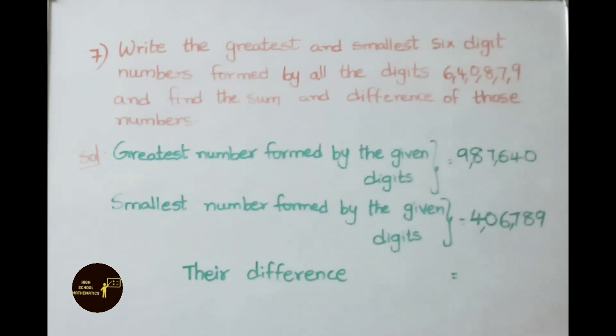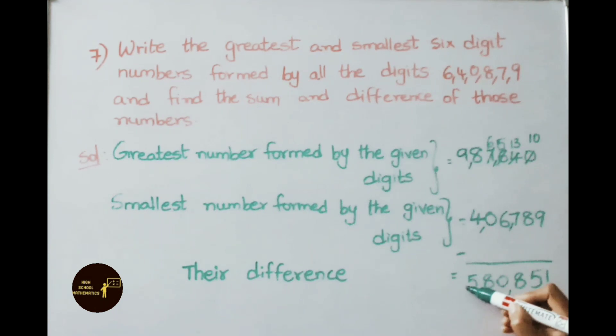Now let us see their difference: 9,87,640 minus 4,06,789. We need to subtract them now. From 0 we can't subtract 9, we shall borrow. 0 becomes 10, 4 becomes 3. 10 minus 9 is 1. From 3 we can't subtract 8, we just borrow. It becomes 13 and the 6 becomes 5. 13 minus 8, we get 5. From 5 we can't subtract 7. If we borrow, 5 becomes 15 and the 7 becomes 6. 15 minus 7, we get 8. 6 minus 6 is 0, 8 minus 0 is 8, 9 minus 4 is 5. We get an answer 5,80,851.